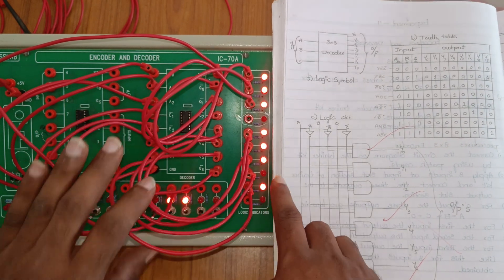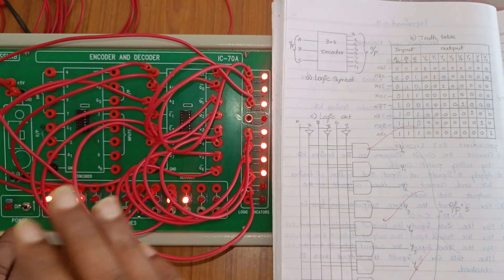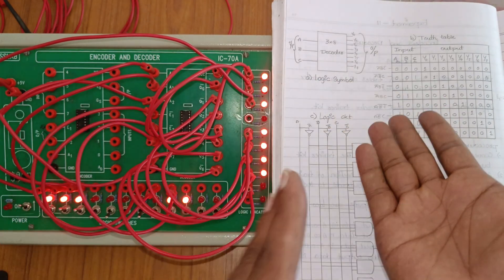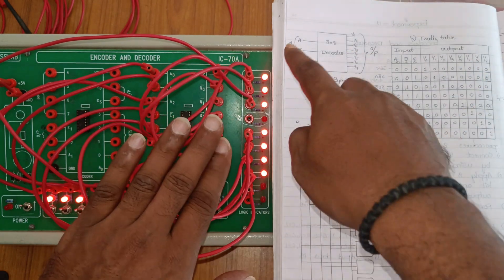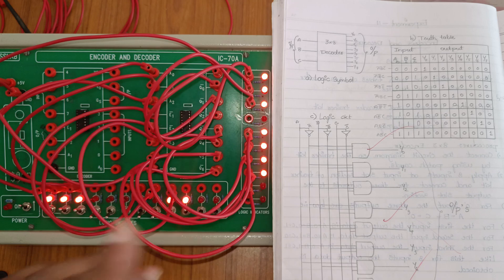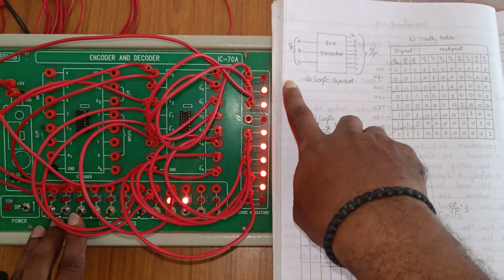For 111, we get the seventh bit. So three binary inputs generate eight outputs - octal or decimal outputs. Three binary inputs, eight outputs are present. You can see: 000 is the first...